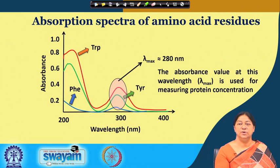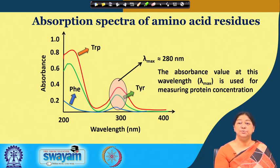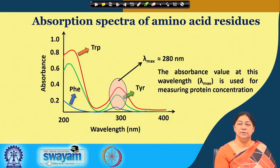If a protein has aromatic amino acid residues and we use a wavelength of 280 nanometers, we select this wavelength on our machine to check whether a protein sample is present. If we have two test tubes — one protein solution and one buffer — we set the wavelength at 280 nanometers, auto-zero the machine with the buffer, and the buffer shows no absorbance at 280 nanometers. The protein solution will show a definite absorbance at 280 nanometers, and from the molar extinction coefficient, we can determine the concentration using Lambert-Beer's law: absorbance equals epsilon times C times L, with path length typically 1 centimeter.